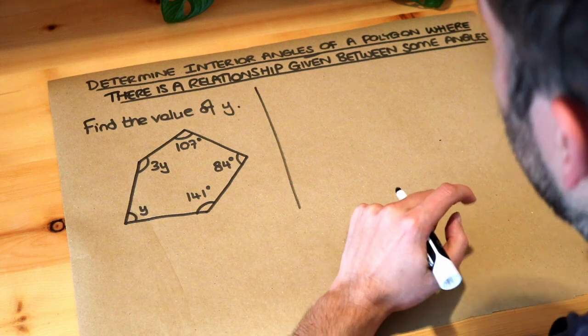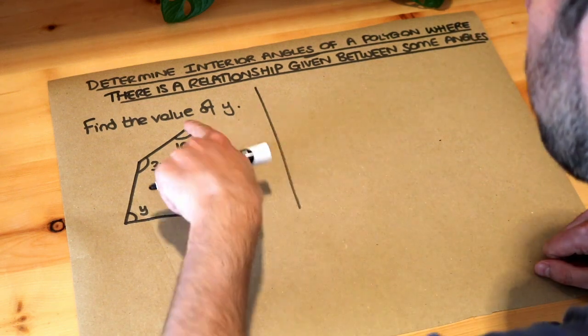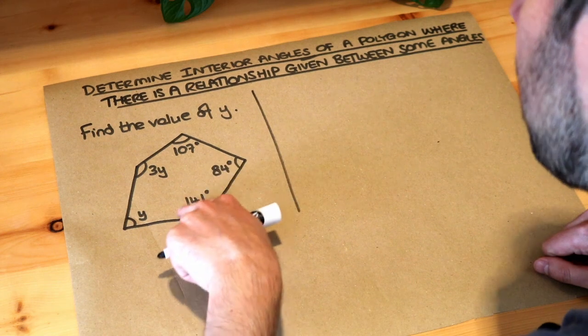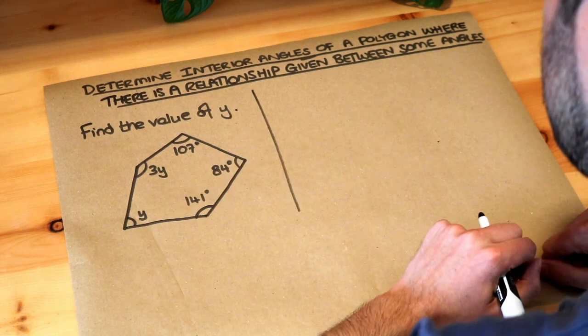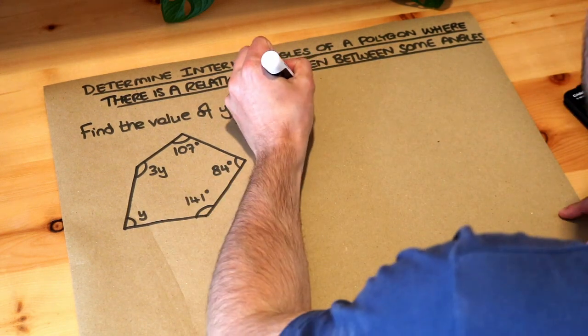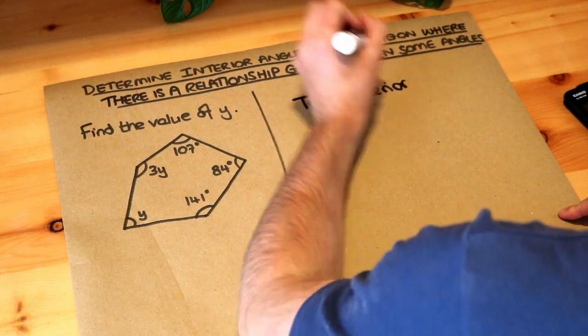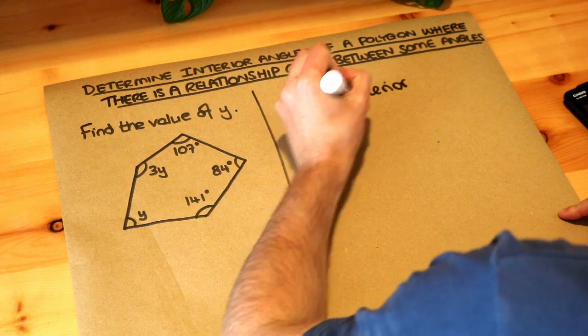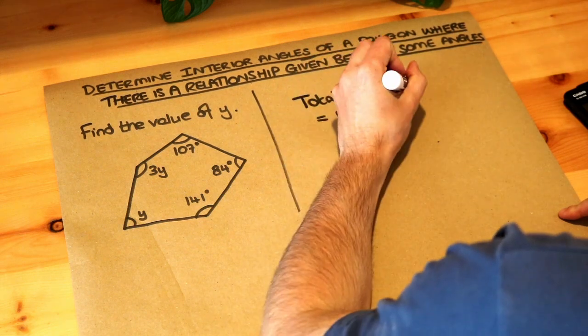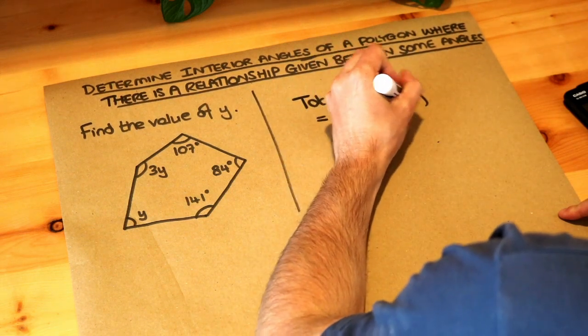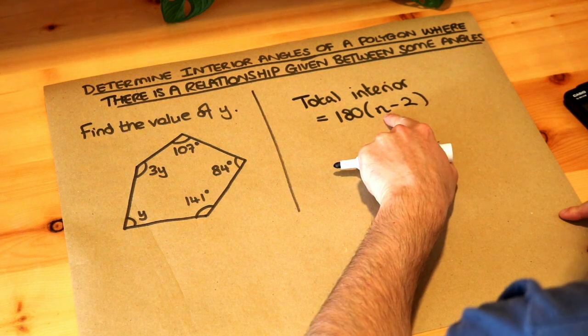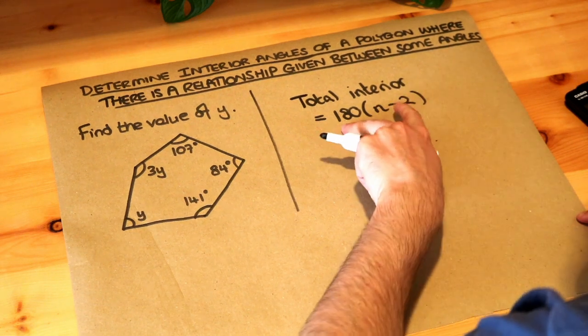Now in a previous video we saw how to find the total interior angle, so the total of the inside angles of any polygon, and the formula was this. So the total interior angle if there's n sides is 180 multiplied by n minus 2. So we take the number of sides, we subtract 2, and then we times that by 180.